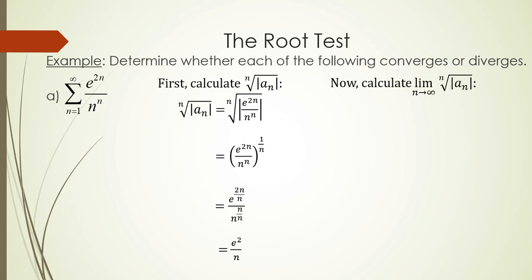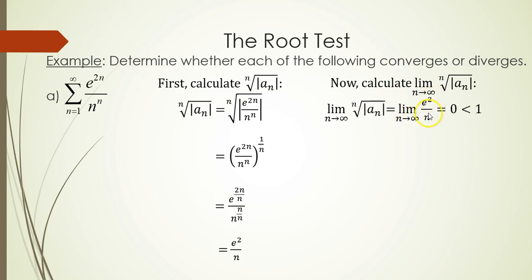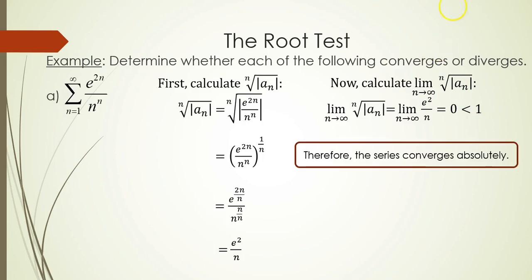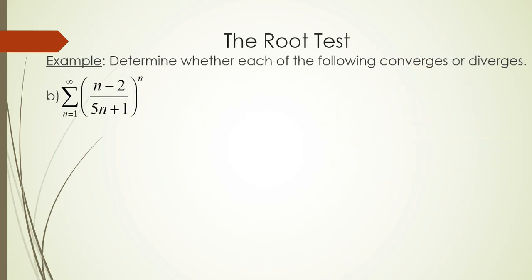Now we calculate the limit as n goes to infinity of e squared over n. Since e squared is a nonzero numeric value divided by infinity — like dividing a few dollars among infinitely many people — you get zero. Since zero is less than 1, by the root test the series converges absolutely.